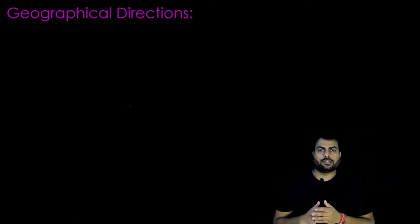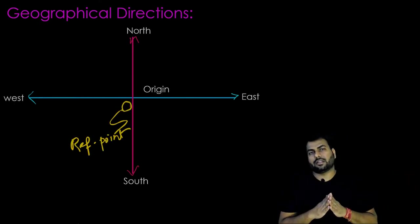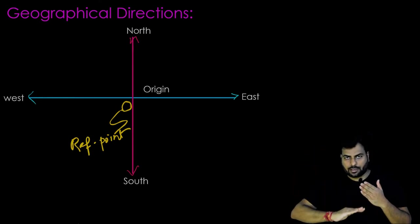In geographical direction, east is taken towards right of the origin and west is taken towards the left of the origin. North is taken upwards and south is taken downwards of the origin.